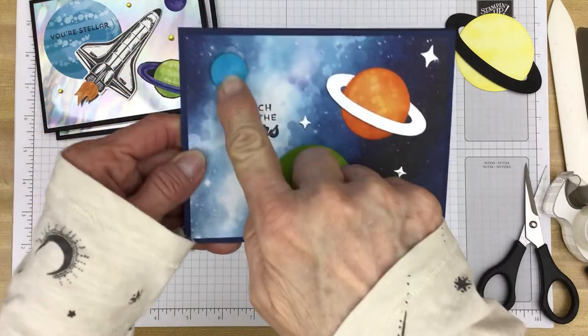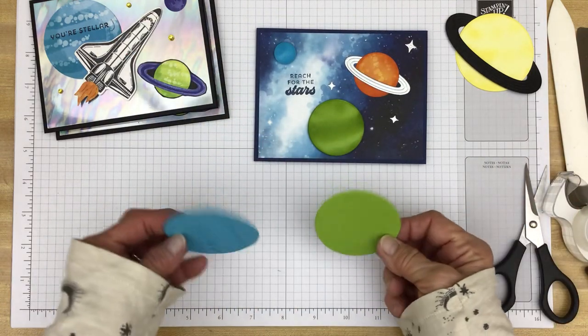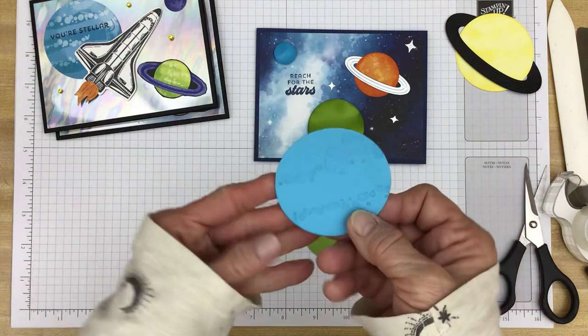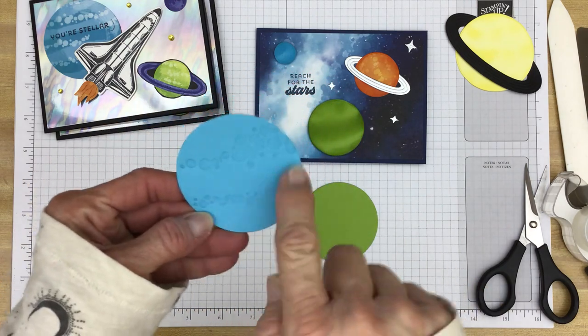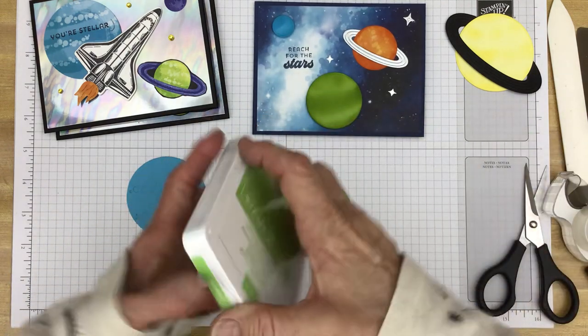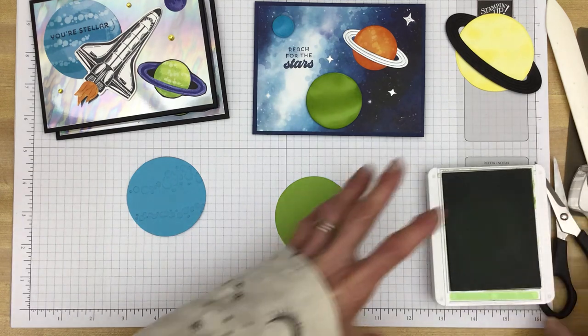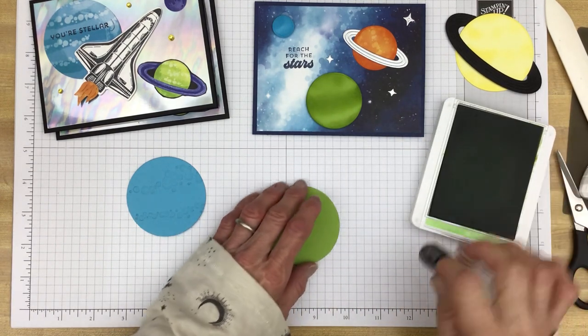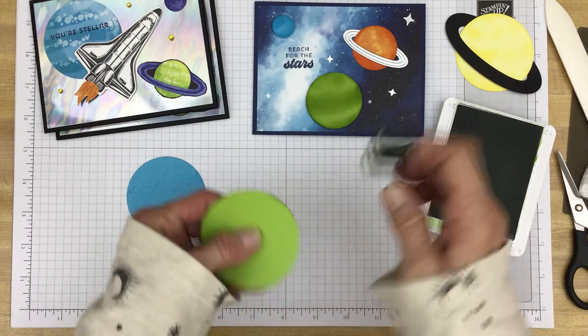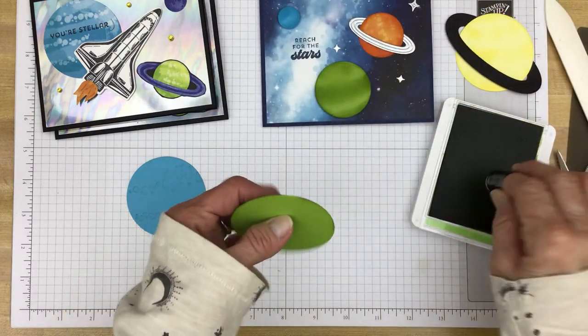Now, for these planets, I just used some sponging. So I have a planet here. I used, again, the largest circle die that comes with the dies. And I cut out two planets. This one, I used the embossing dies to get these little designs on it. This one is just plain. And it is granny apple green. So I'm going to take some granny apple green ink and a sponge dauber. And I'm just going to get some ink on it. And then, all I did, well, first, I went around the edges. And even on the planet I made with the designer series paper, I used pumpkin pie and went around the edges just to kind of give it more dimension.